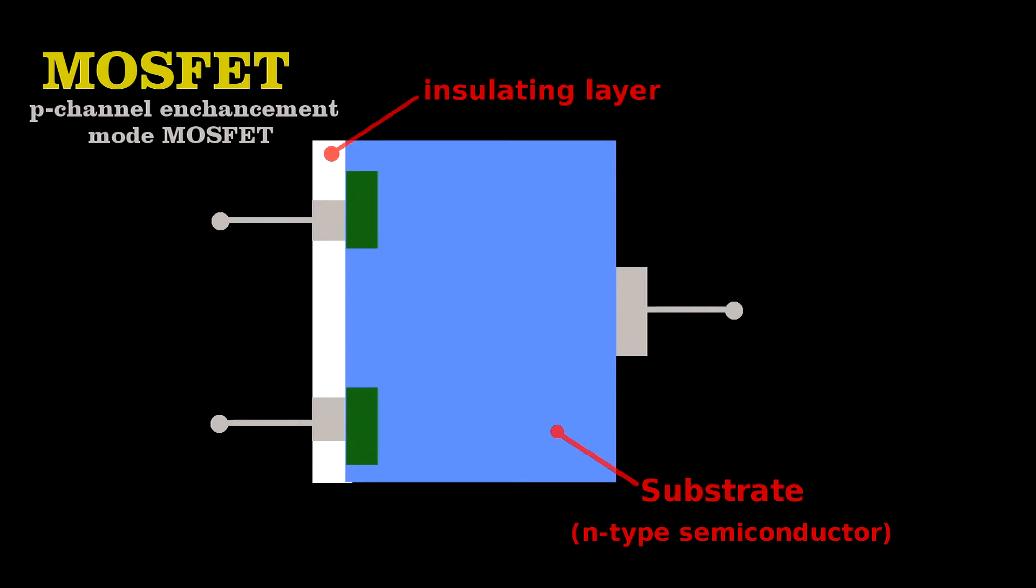Next, they coat the diodes with a thin layer of silicon dioxide. Unlike metals or semiconductors, this doesn't conduct electricity at all. On that, they place one more metal contact called the gate, which opens or closes the current channel between the source and the drain.